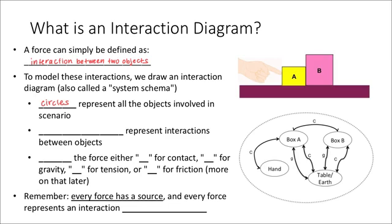The arrows represent interactions between objects, and they're double-headed arrows. In this diagram, we label the force either a C for contact, a G for gravity, a T for tension, or F for friction, and we'll learn more about each of these individual forces later. It's important to remember that every force has a source, and every force represents an interaction between two objects.